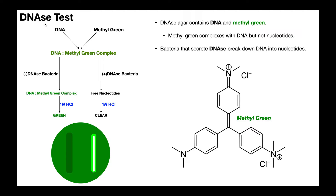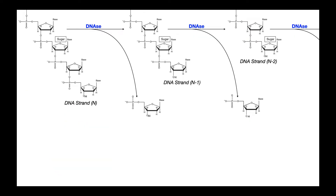Let's first get an understanding of what DNases do. When we look at this DNA strand, it's going to have units. Each unit is composed of three things: a phosphate, a five-membered ring which is deoxyribose, and then a base which is not shown. That base is either A, T, C, or G — which is adenine, thymine, cytosine, or guanine.